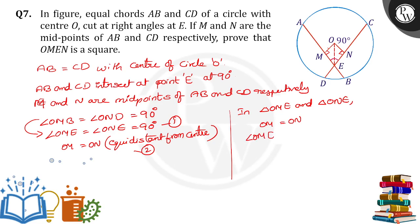Angle OME we got it from 1, and OE is equal to OE. Therefore triangle OME is congruent to triangle ONE by using RHS.